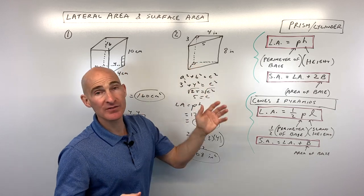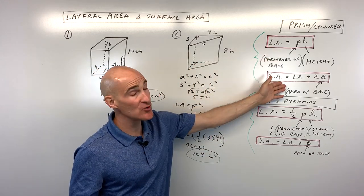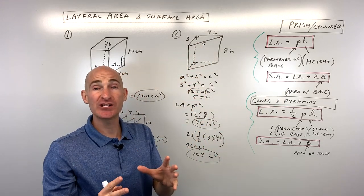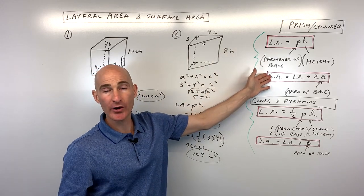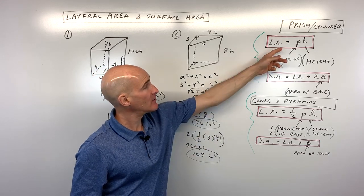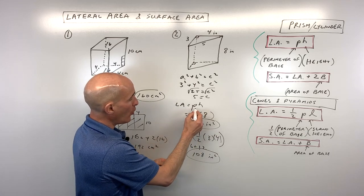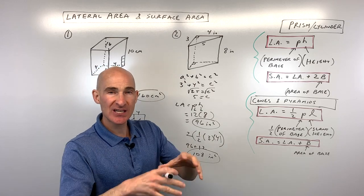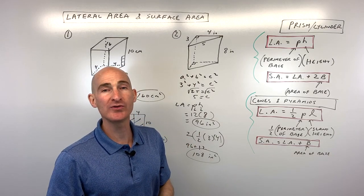Another way to approach prism problems is to find the area of each face individually and add them together, though using the formulas is quicker and more efficient. I recommend writing the formula down and substituting values directly below each variable to stay organized. We'll do a couple more prism examples, then move on to cones and pyramids.